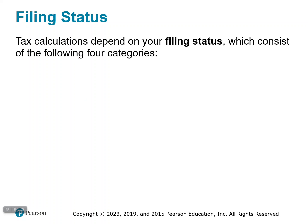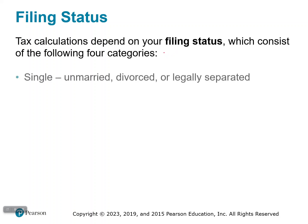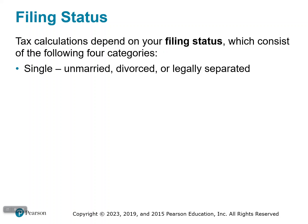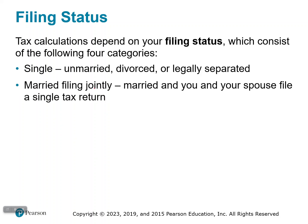Now, in order to calculate your tax, it depends on your filing status. There are four categories. First is single — if you are unmarried, divorced, or legally separated. Then there's married filing jointly: you're legally married and you and your spouse file on the same tax return. There's one tax return for both of you because you're married, and that's what you do.